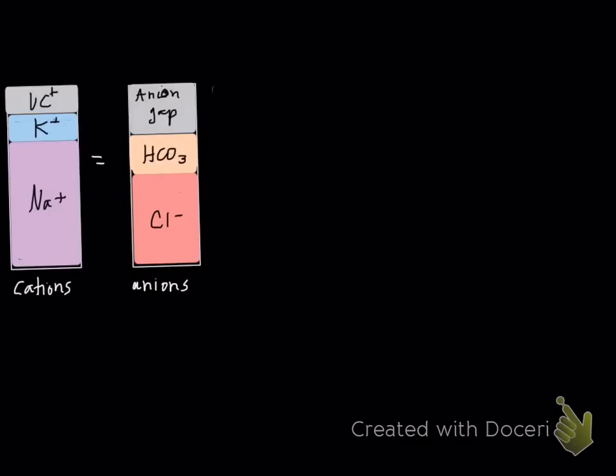If you haven't watched the anion gap video yet—anions are, over here is our unmeasured cations, and our unmeasured anions are on this side. That is what our anion gap is. It's greater than our positives. Again, when it's increased, it indicates CLUE.